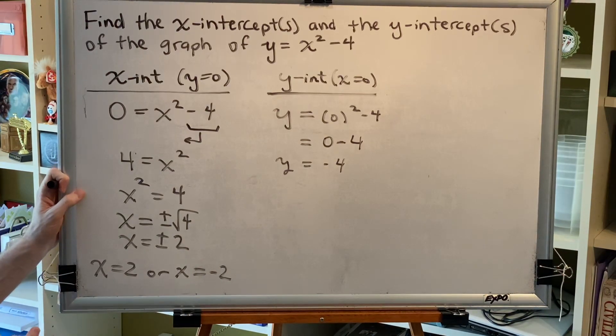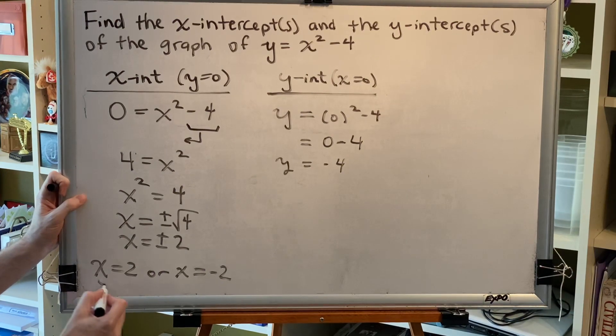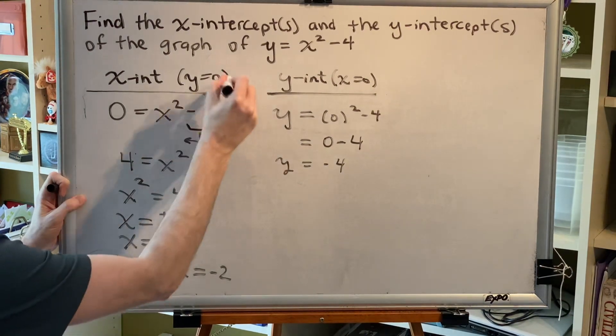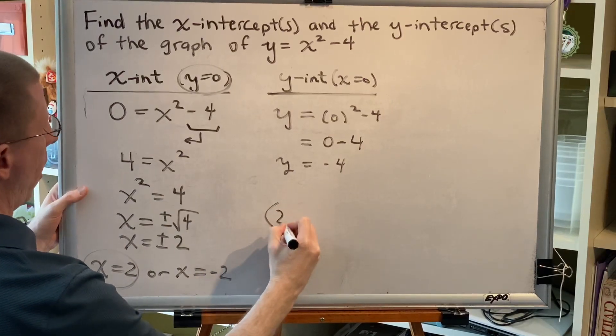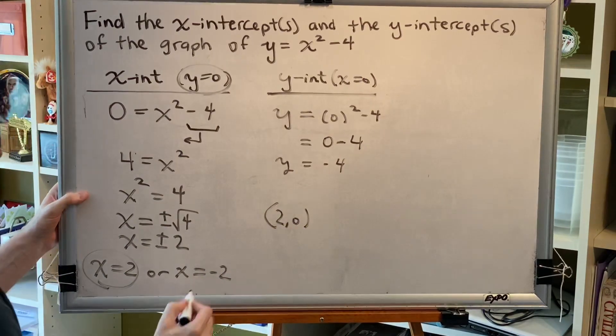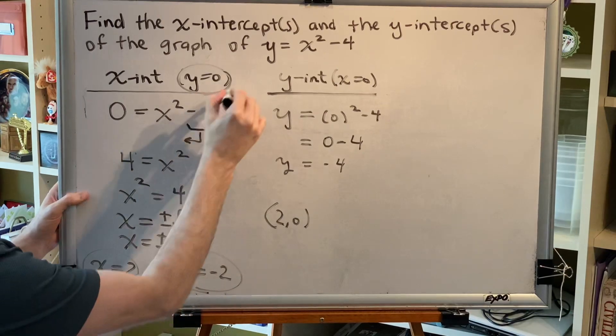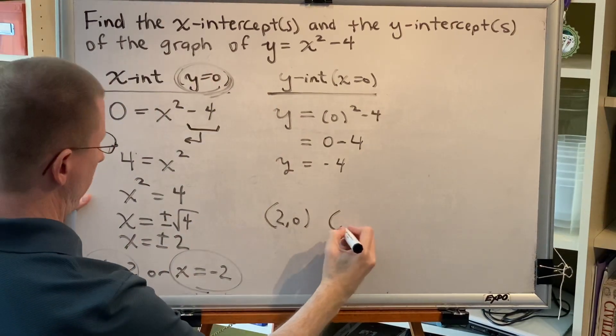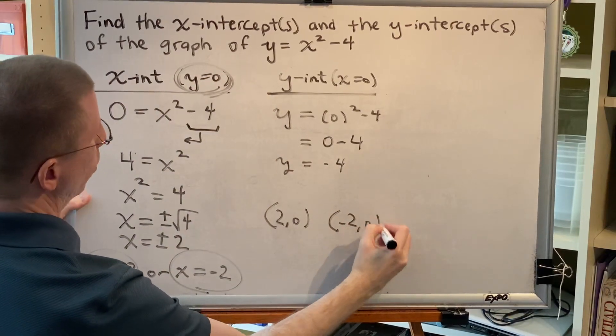Now all of these intercepts can be written as ordered pairs. For example, when x equals 2 and we know y equals 0, that gives us the ordered pair (2, 0). And when x equals negative 2 and y equals 0, that gives us the ordered pair (-2, 0).